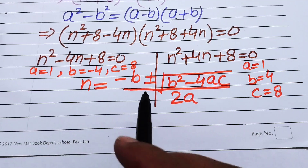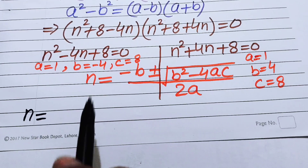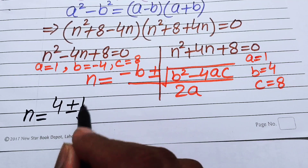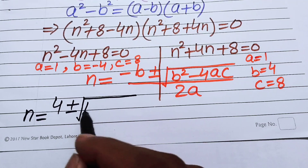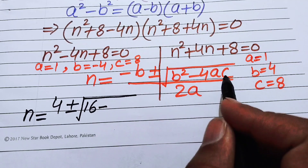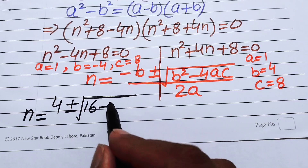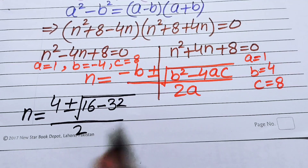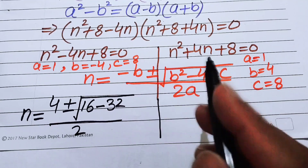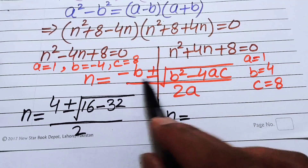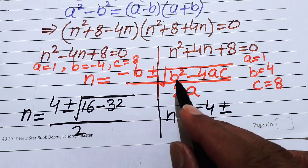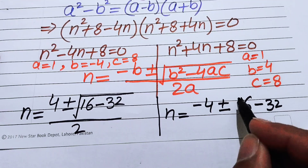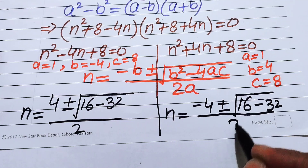Substituting Case 1 into the formula: n = (−(−4) ± √((−4)² − 4·1·8)) / (2·1) = (4 ± √(16 − 32)) / 2 = (4 ± √(−16)) / 2. For Case 2: n = (−4 ± √(16 − 32)) / 2 = (−4 ± √(−16)) / 2.